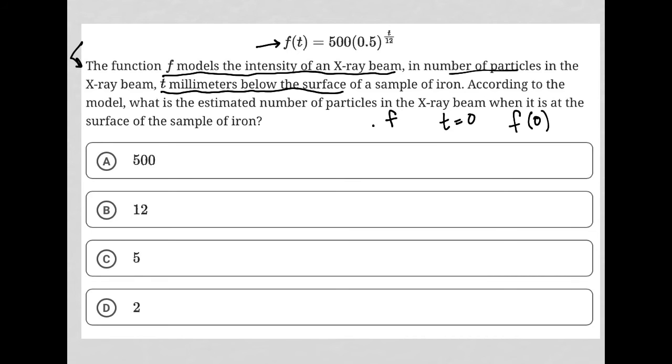So that's our translation. The question is asking us to solve for f. It's telling us to solve for f when t is equal to 0, and therefore we know that we're looking for f of 0. So how would we do that in this particular case?